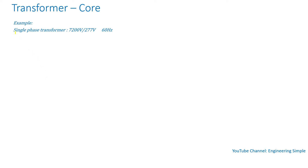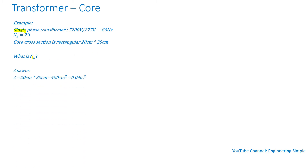Let's do an example. We have a single-phase transformer where the primary side is 7200 volts, the secondary side is 277 volts, and the frequency is 60 Hz. The number of turns in the secondary winding is 20, and the core cross-section area is rectangular at 20 centimeters by 20 centimeters. We want to calculate the number of turns in the primary winding.